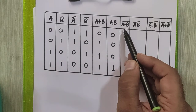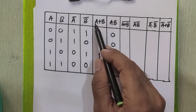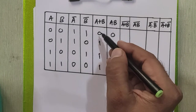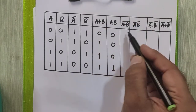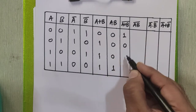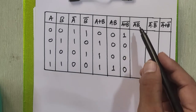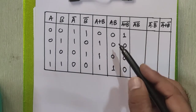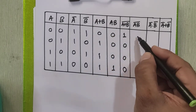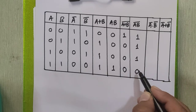To find A plus B whole complement, take the complement of the A plus B column by replacing 0 by 1 and 1 by 0. This gives 1, 0, 0, 0. To find the complement of the product term AB, take the complement of the AB column, giving 1, 1, 1, 0.